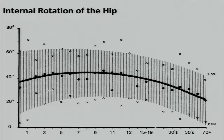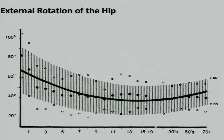This shows the internal rotation of the hip joint with aging. Internal rotation is reported to be the largest at childhood and then decreases as age advances. On the other hand, external rotation is reported to be the smallest at school age and then increases as age advances.